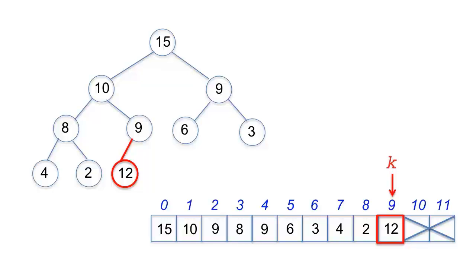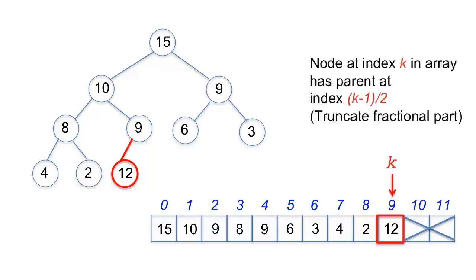We need to compute the location of 12's parent, which is at index k-1 divided by 2. Since k is 9, the parent index p is 9-1, which is 8, divided by 2, which is 4. The item at this index is 9. 12 is compared with 9, and since it is greater, they switch places.